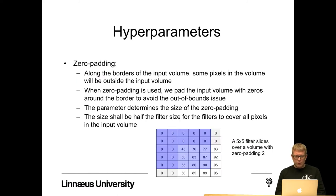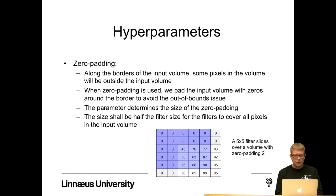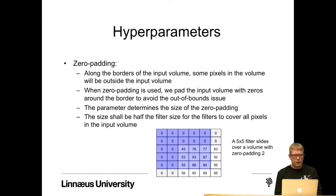Zero padding: if we place a filter at the edges of the image, some part of the filter will be out of bounds. Along the borders of the input volume, some pixels will be outside of the filter. When zero padding is used, we pad the input volume with zeros around the border to avoid out-of-bounds issues for our filters. The parameter determines the size of the zero padding, and the size should be half the filter size for the filters to cover all pixels in the input volume. In the example shown, we have a 5x5 filter sliding over a volume with zero padding of 2, so the filter is positioned at the first pixel in the image with a value of 45, and we need a zero padding of 2 for the filter to not be out of bounds.